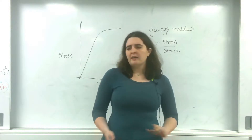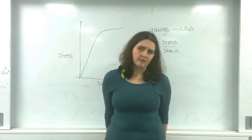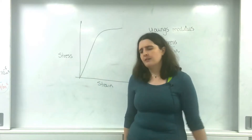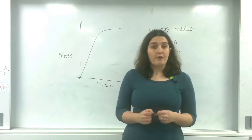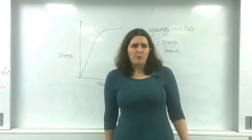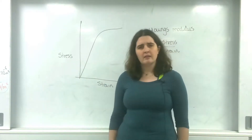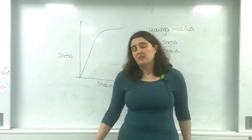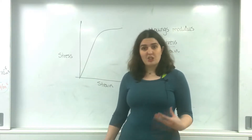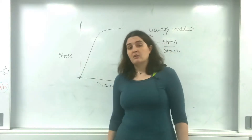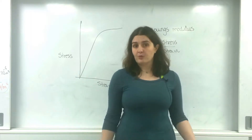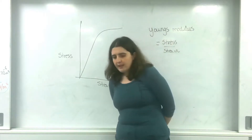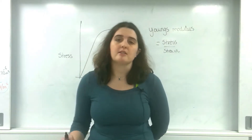But if you change anything about that spring — its length, its diameter, its material — you've got a different graph. What Young did is he looked at normalising it, to try and find the properties of materials. To look at what happens if I get a steel spring — let's actually find a relationship between the steel spring and the material of it, and let's try to normalise the force, and look at the amount of extension based on the original.